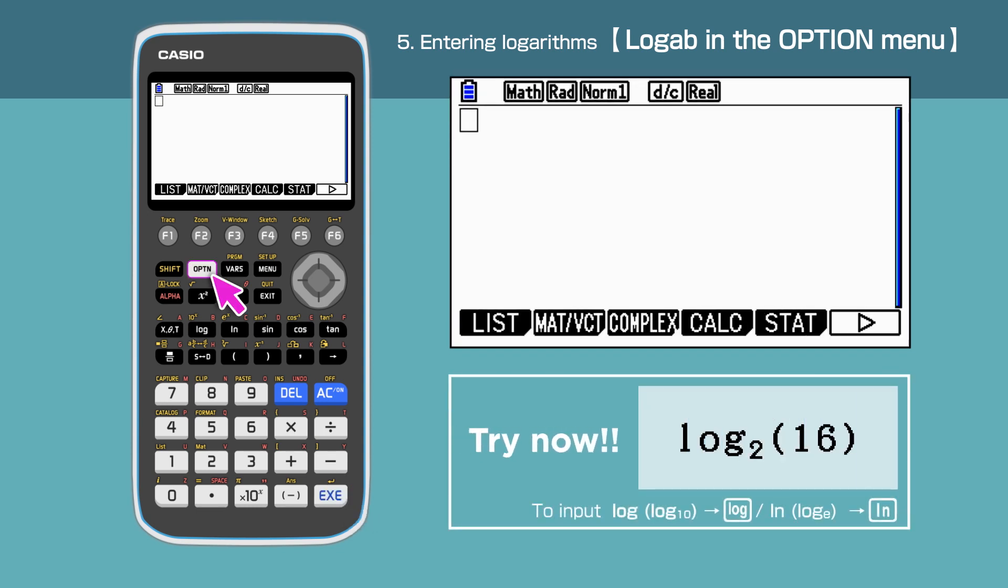Press the Option key and open the Option Command menu. Then select Calc by pressing F4. We are able to see a white triangle on the right. This means there are more function items available under this menu. Press F6. Press F4 to select Log AB.